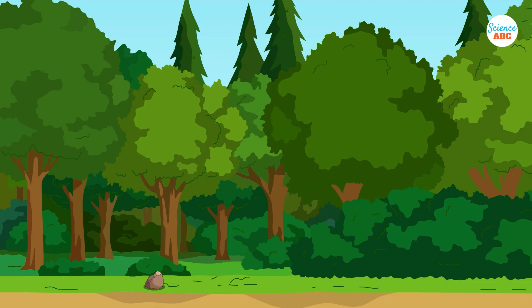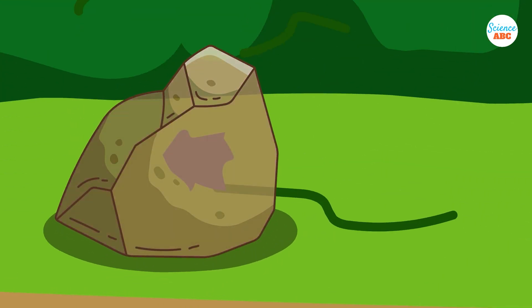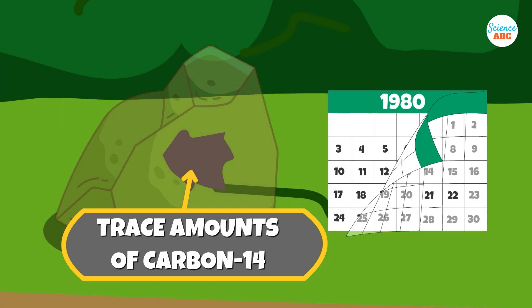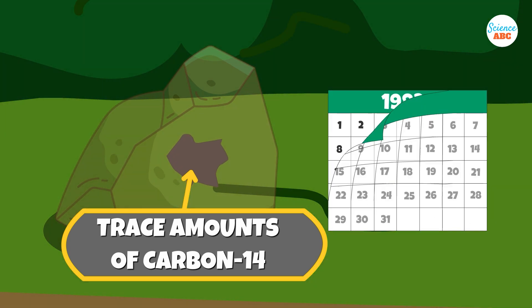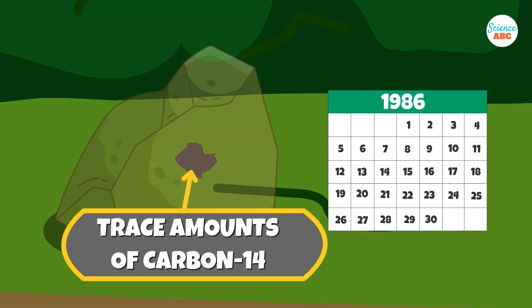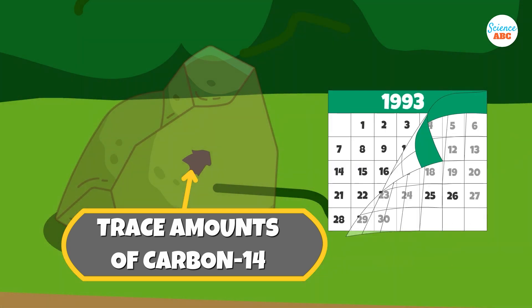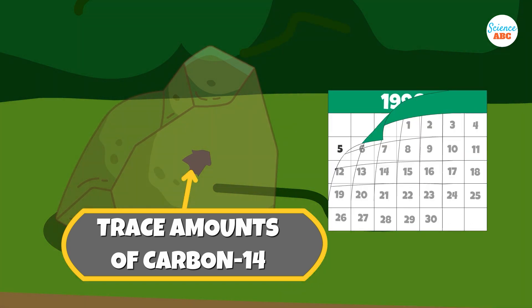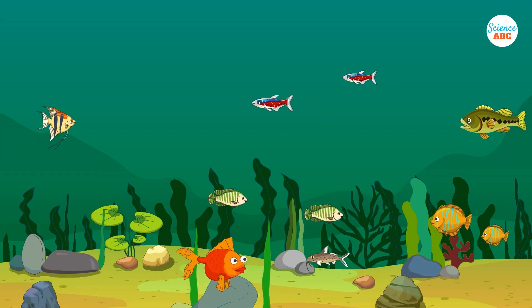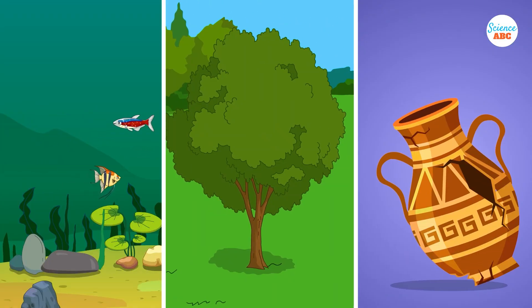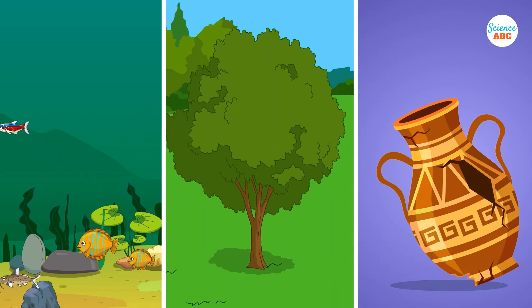Scientists can determine how long ago the material was alive by measuring the amount of carbon-14 remaining in the material. This technique is useful when studying the environment, living organisms, and ancient artifacts that archaeologists uncover during their excavations.